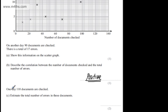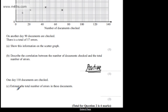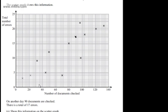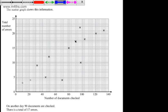It says one day, 110 documents were checked. In part C for two marks, estimate the total number of errors in these documents. All I'm going to do now is a line of best fit.